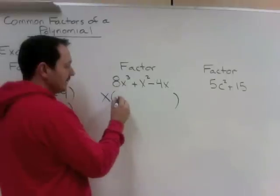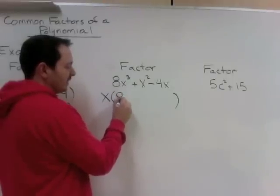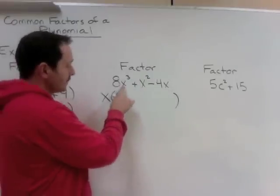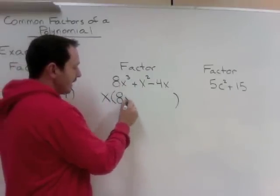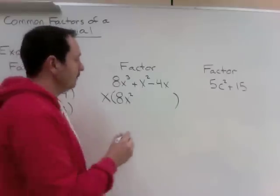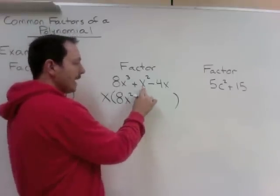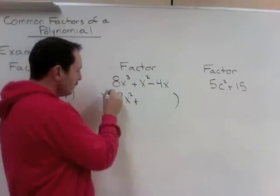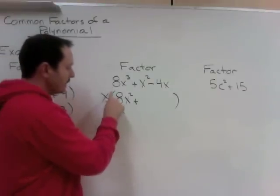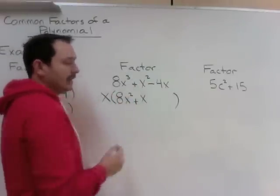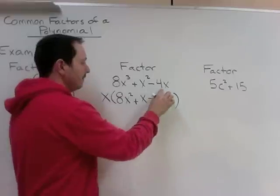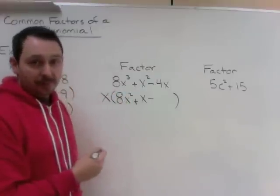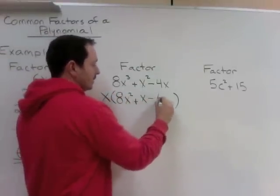So x cubed divided by x is, well let's deal with our 8 first. We're not touching the numbers in this case, because they had no numbers in common. But the variables, x cubed divided by x is x squared. And this is something you did in grade 9. x squared divided by x, where when we're dividing variables we subtract. So this is a power of 2, this is a power of 1, although we don't show that. So the power of 2 minus the power of 1 is a single x. And 4x divided by an x, there's a 1 and a 1. When we divide variables we're subtracting, so 4x divided by x is 4.